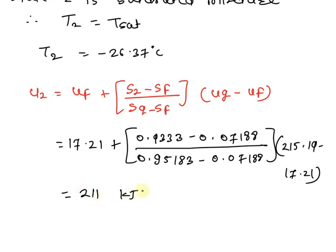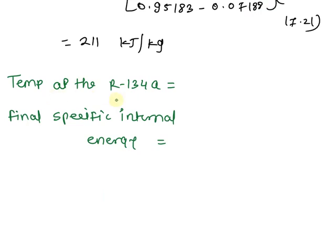So our final answer is temperature of R134a is equal to minus 26.37 degree celsius and final specific internal energy is equal to 211 kilojoule per kg.